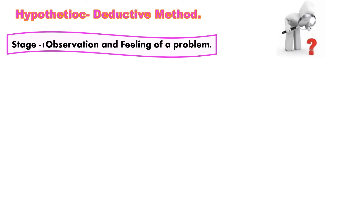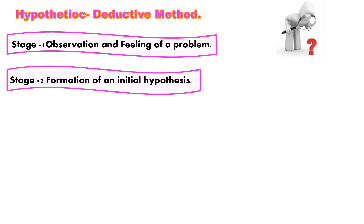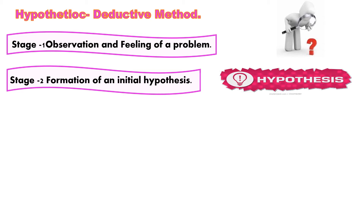The second stage is the formation of an initial hypothesis. When the observed facts cannot be understood, the scientist puts forth a temporary solution to explain the observed facts. This tentative or temporary solution is called a hypothesis.